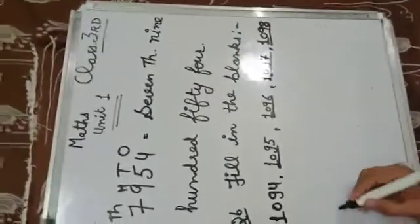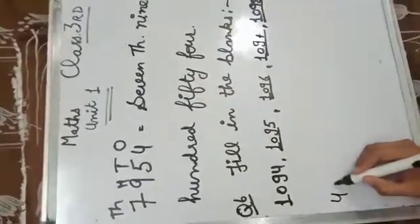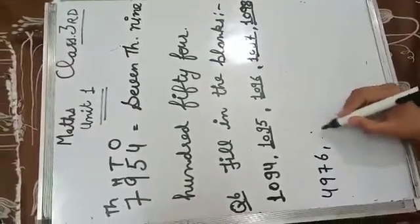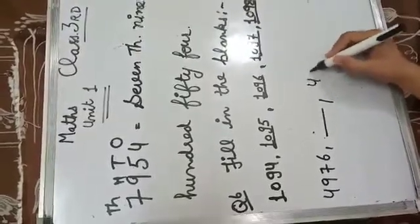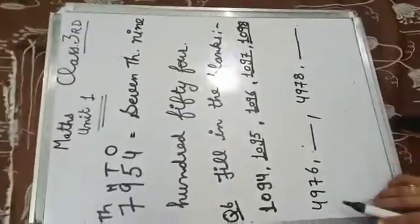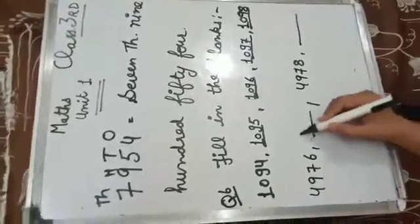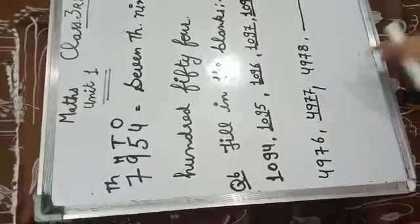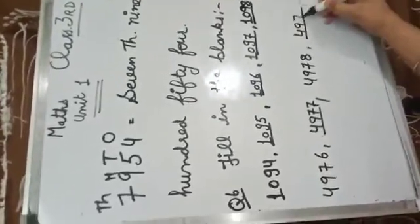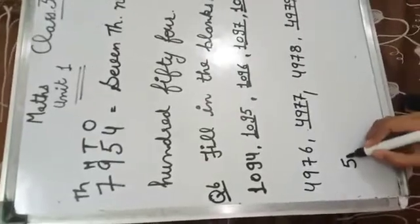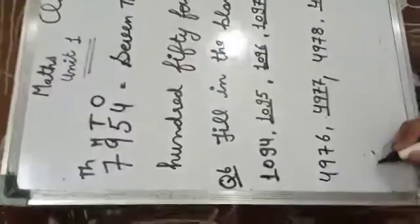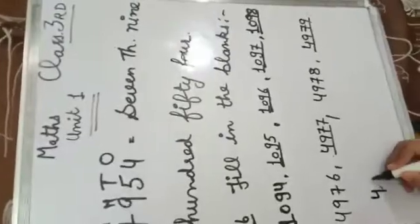Next pattern: four thousand nine hundred seventy-six, then a fill-up, then four thousand nine hundred seventy-eight. So the missing number is four thousand nine hundred seventy-seven. Then four thousand nine hundred seventy-eight, four thousand nine hundred seventy-nine, and next is five thousand.